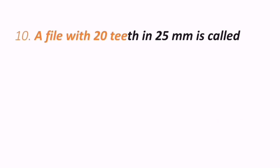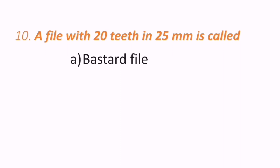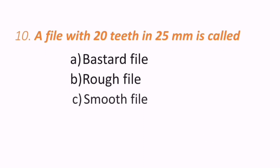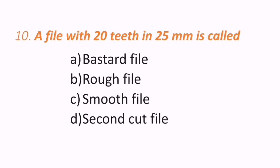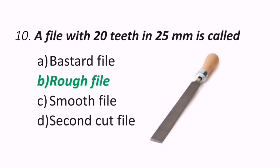Tenth question: a file with 20 teeth in 25 mm is called what? Options are bastard file, rough file, smooth file, or second cut file. The correct answer is rough file — a rough file has 20 teeth in 25 mm. B is the correct answer.